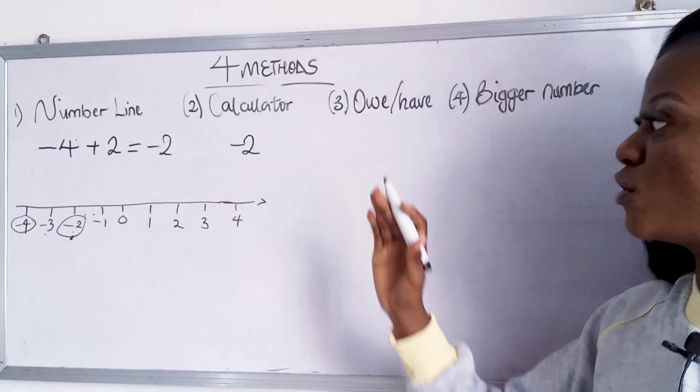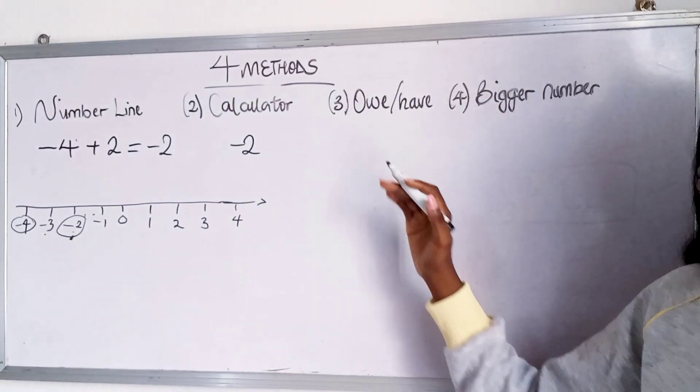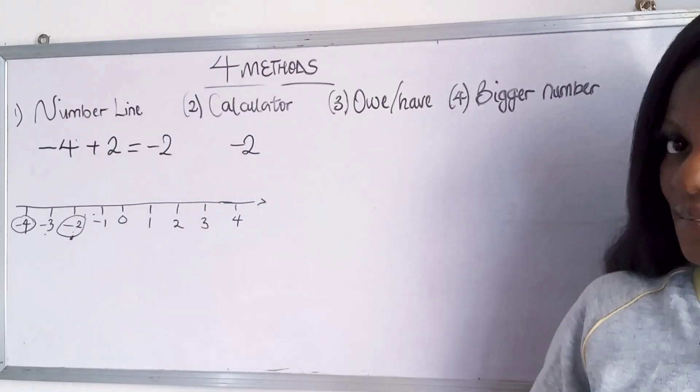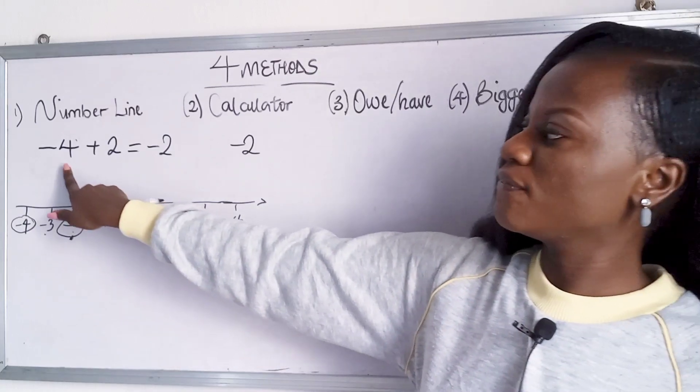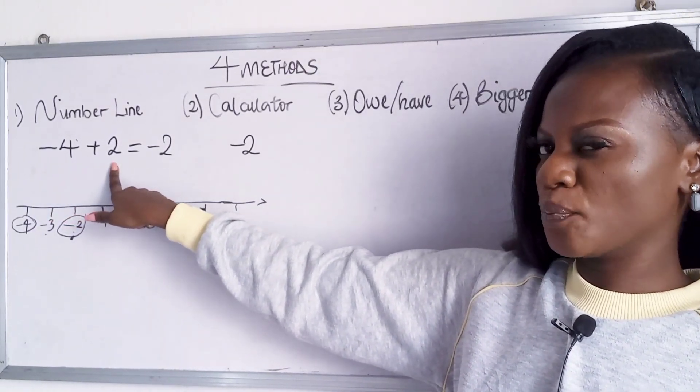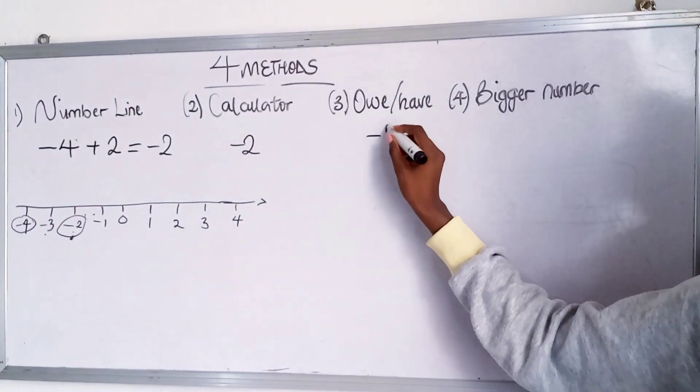Right now moving to the third method which is the owe and have method, meaning when you see a minus sign you know you're owing but when you see a plus sign you have it in your pocket. So you are owing four and then you decided to give two from your pocket. What's left that you are owing? You are owing minus two.